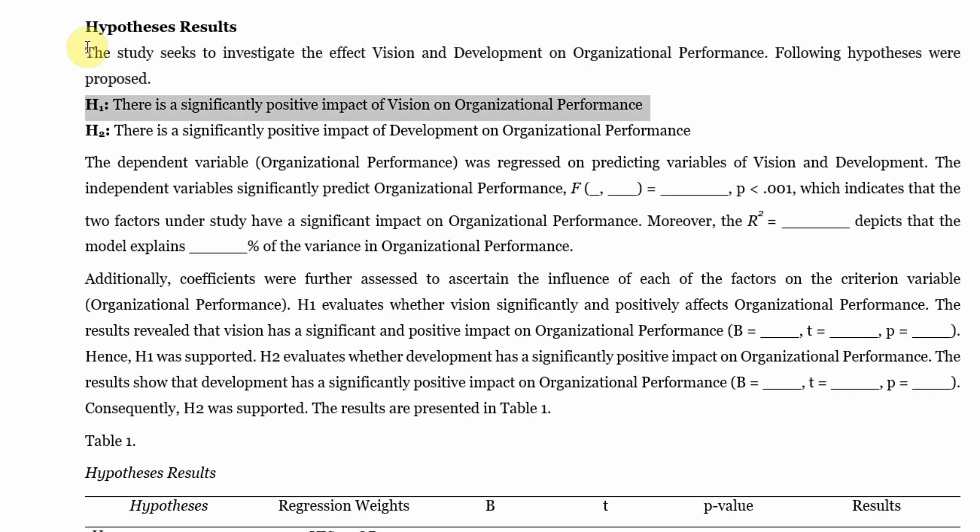H1: there is a significantly positive impact of vision on organizational performance. H2: there is a significantly positive impact of development on organizational performance. The dependent variable organizational performance was regressed on predicting variable vision and development.